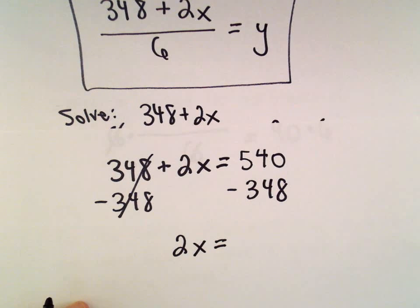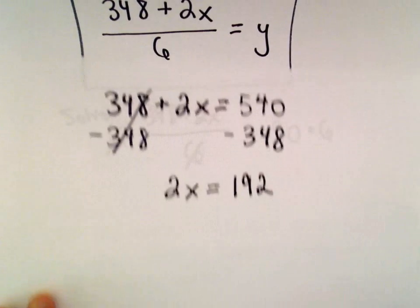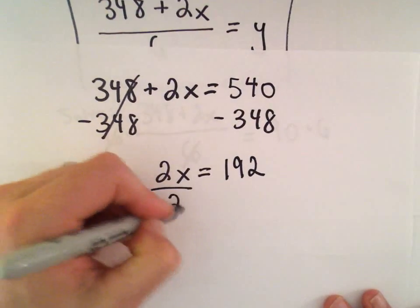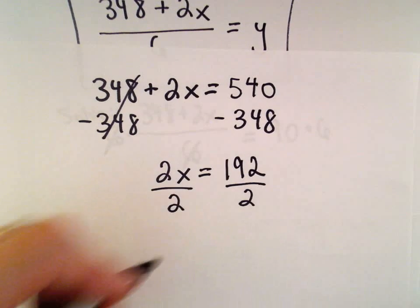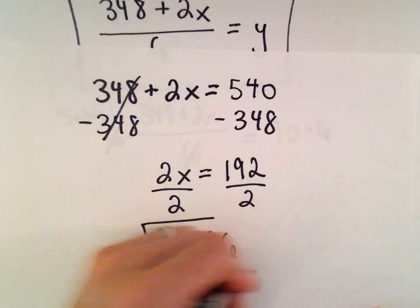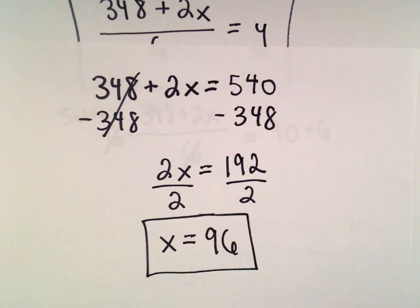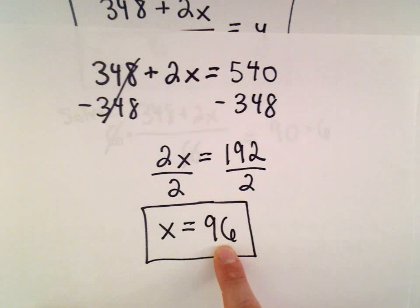Last but not least, all we have to do is divide both sides by 2, and that's going to give us x equals 96. So that tells us that this student will have to make a 96 on the final exam to get exactly a 90 average for the class overall, and that's the answer.